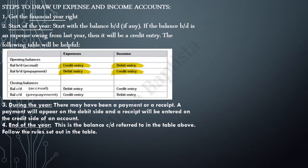For closing balances: if the figure is an expense that has accrued, it will be entered on the debit side of the expenses account. If the figure is a prepayment, it will be entered on the credit side of the expenses account. However, if the figure is an income that has accrued, it will be entered on the credit side of the income account. If the figure is an income that has been prepaid, it will be entered on the debit side of the income account.